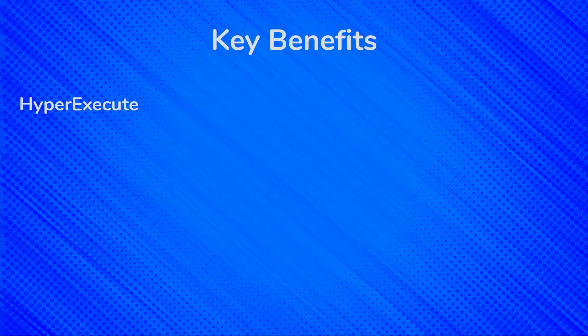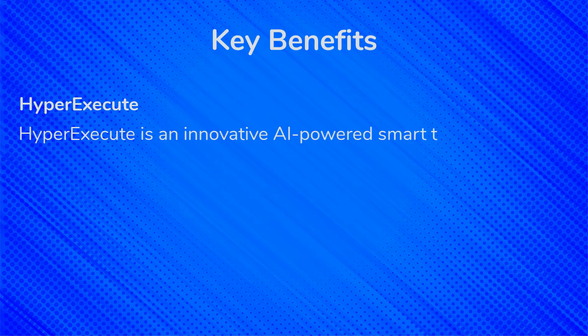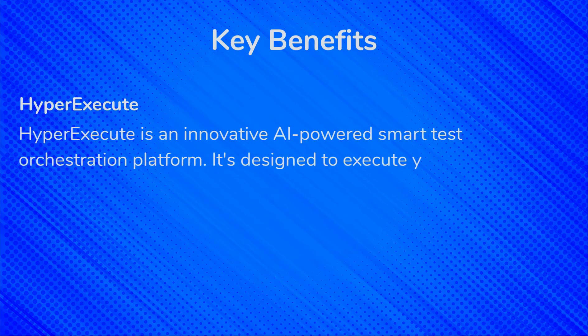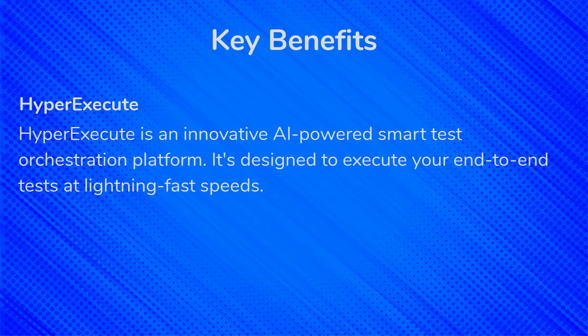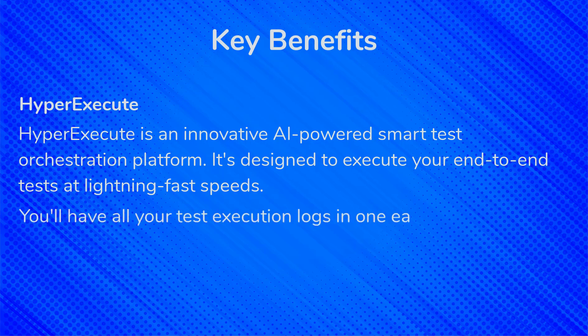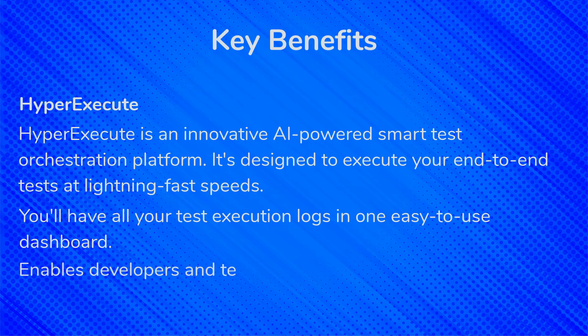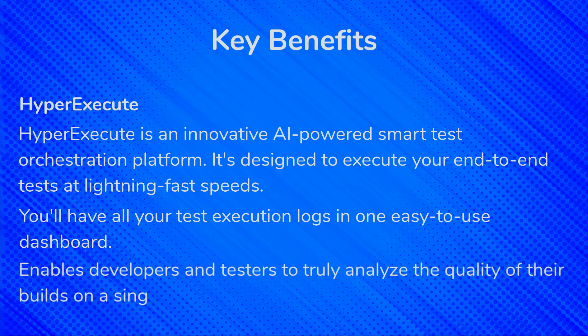HyperExecute is an innovative AI-powered smart test orchestration platform designed to execute your end-to-end tests at lightning-fast speeds. HyperExecute not only reduces network latency but also nearly eliminates test flakiness, reducing it to almost 0%. With HyperExecute, you'll have all your test execution logs in one easy-to-use dashboard — from terminal logs to test run videos, network logs to commands and exceptions, everything you need is at your fingertips. With all test execution data available in a single place, HyperExecute enables developers and testers to analyze the quality of their builds through AI-powered automatic reports generated for each build run.